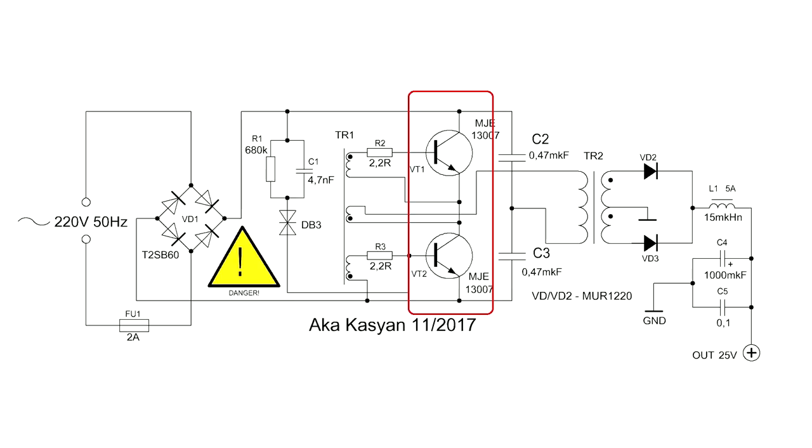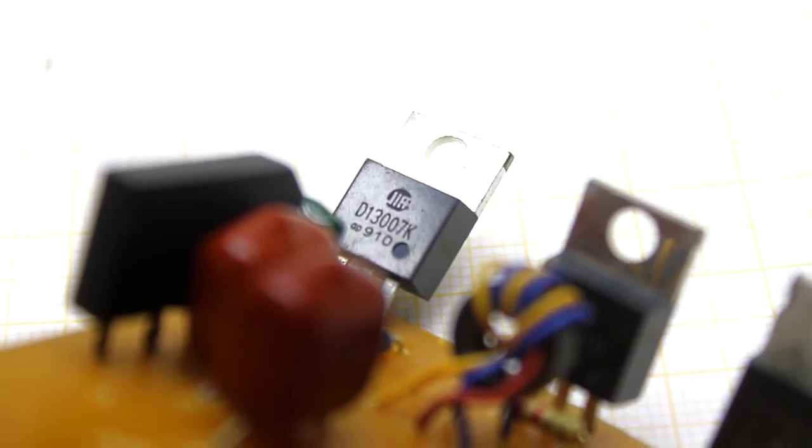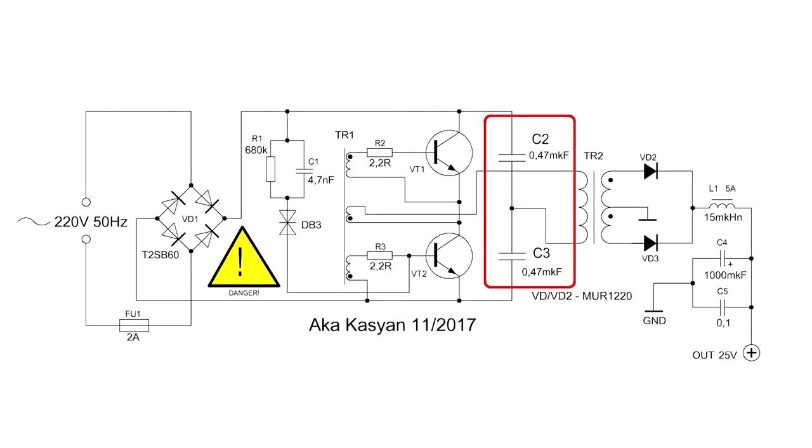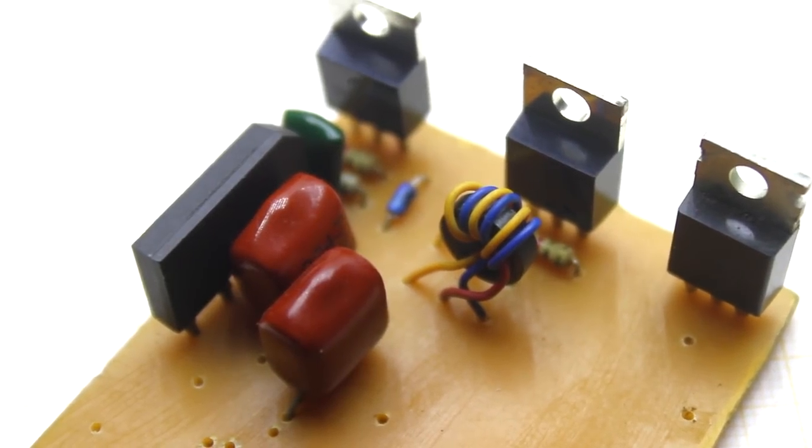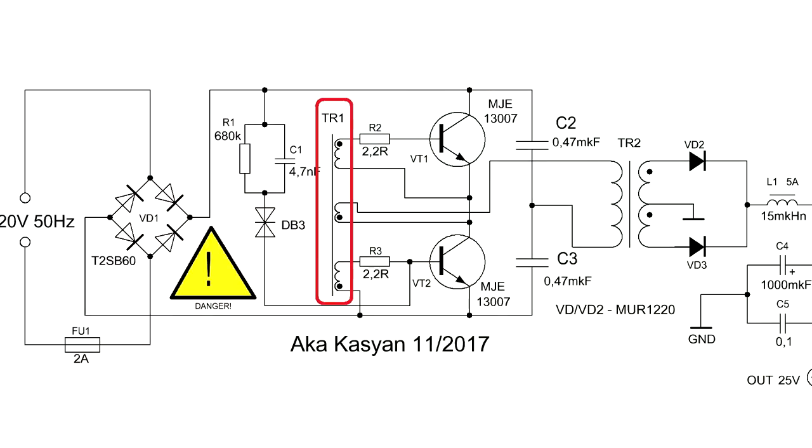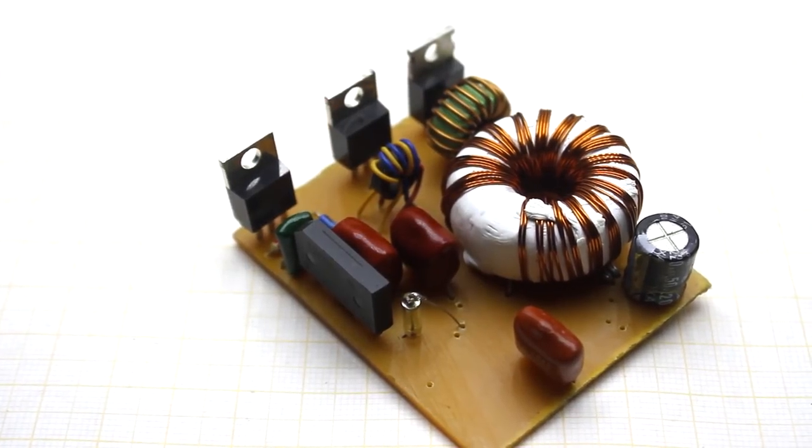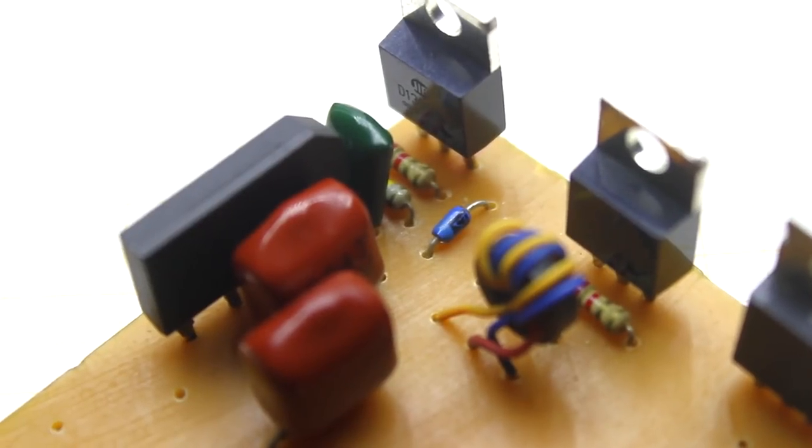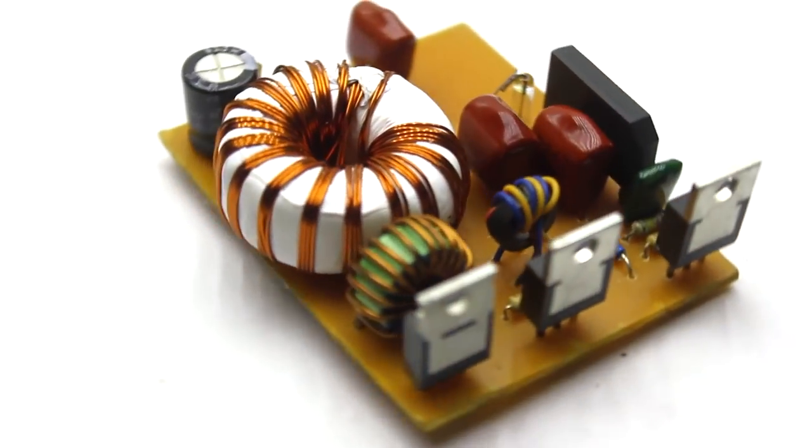Power transistors MJE13007 are taken from a computer power supply. The capacitors for the half-bridge should be with a voltage of 250 to 400 volts. We also have a feedback transformer on the circuit. How it is wound, how to connect windings, and much more is told in the previously mentioned video, a link to which you will find in the description.